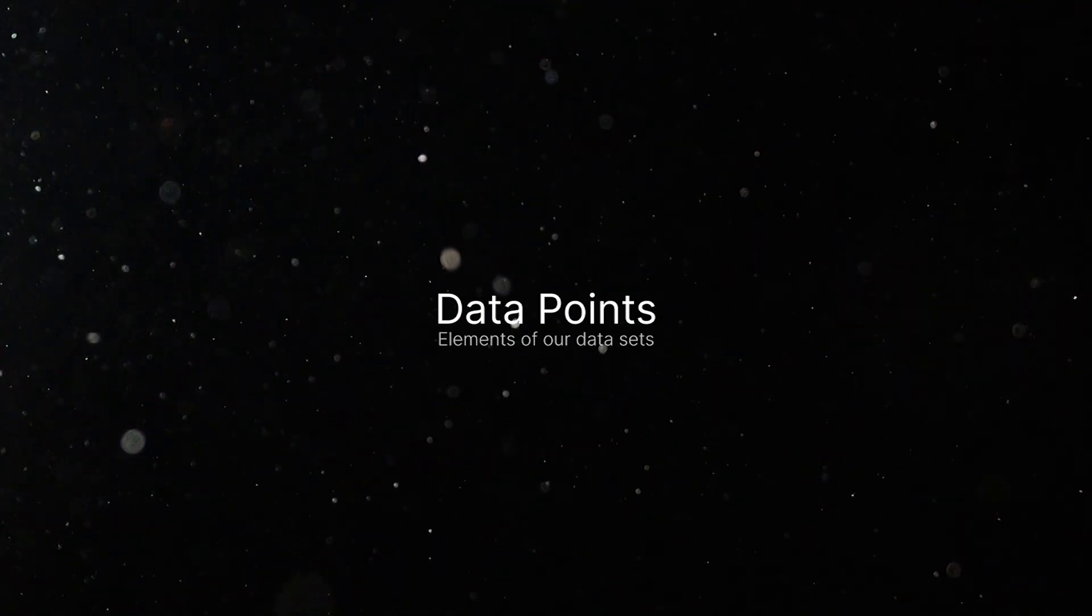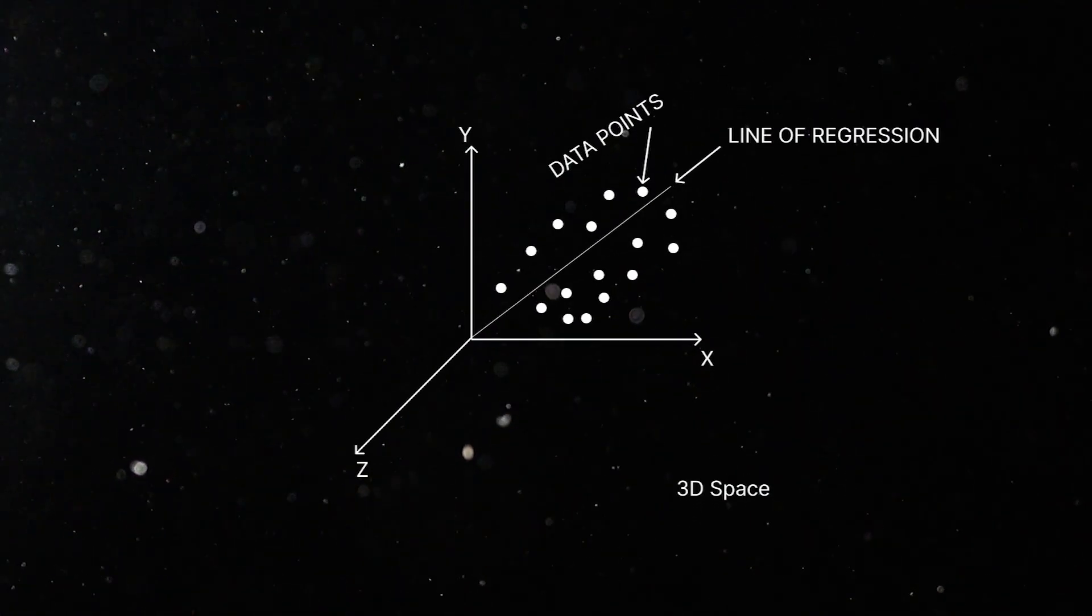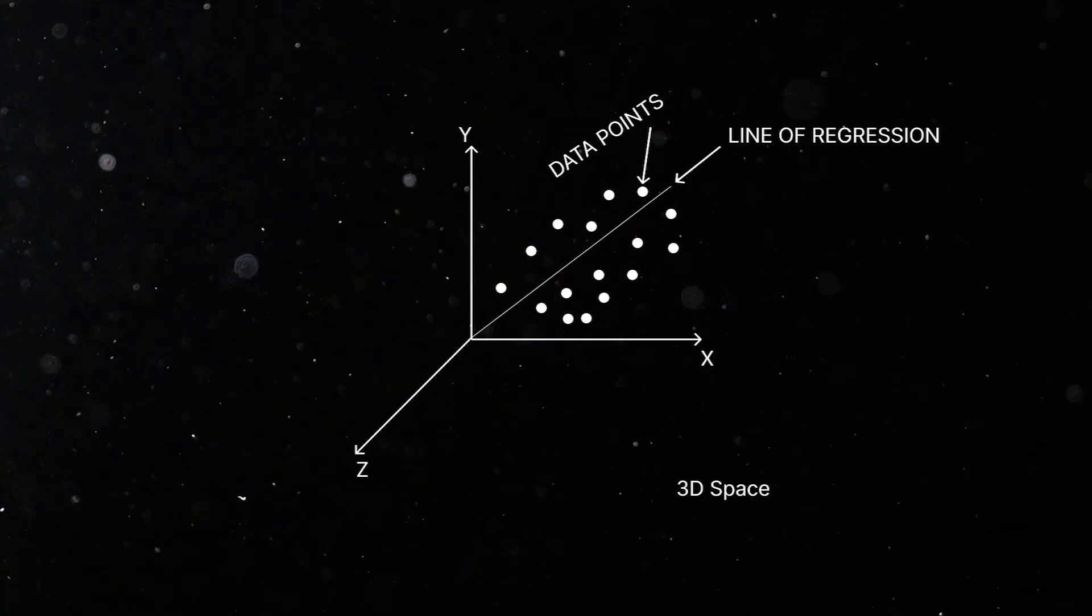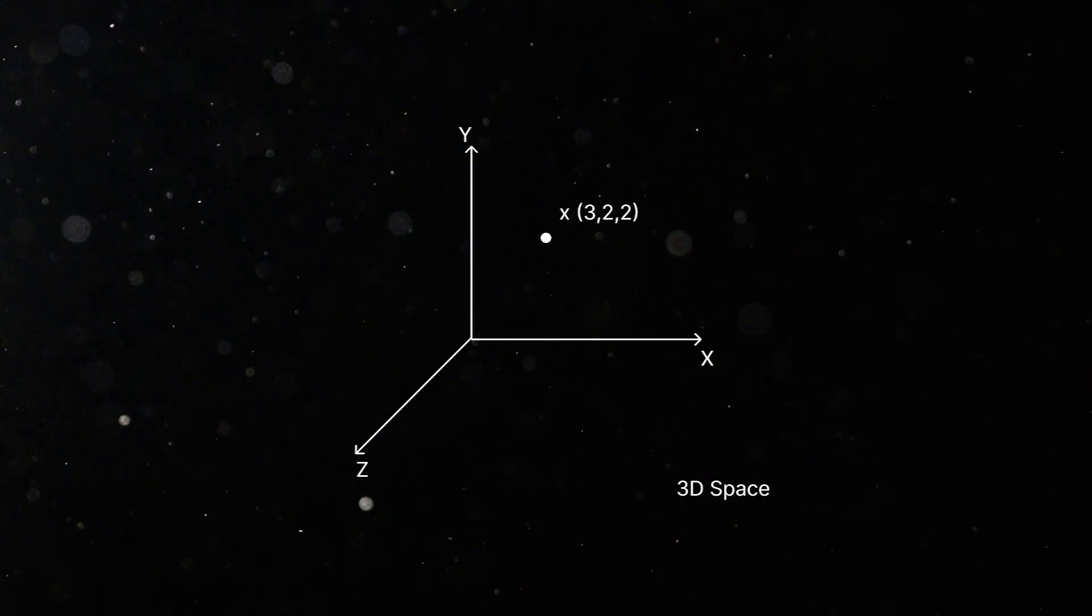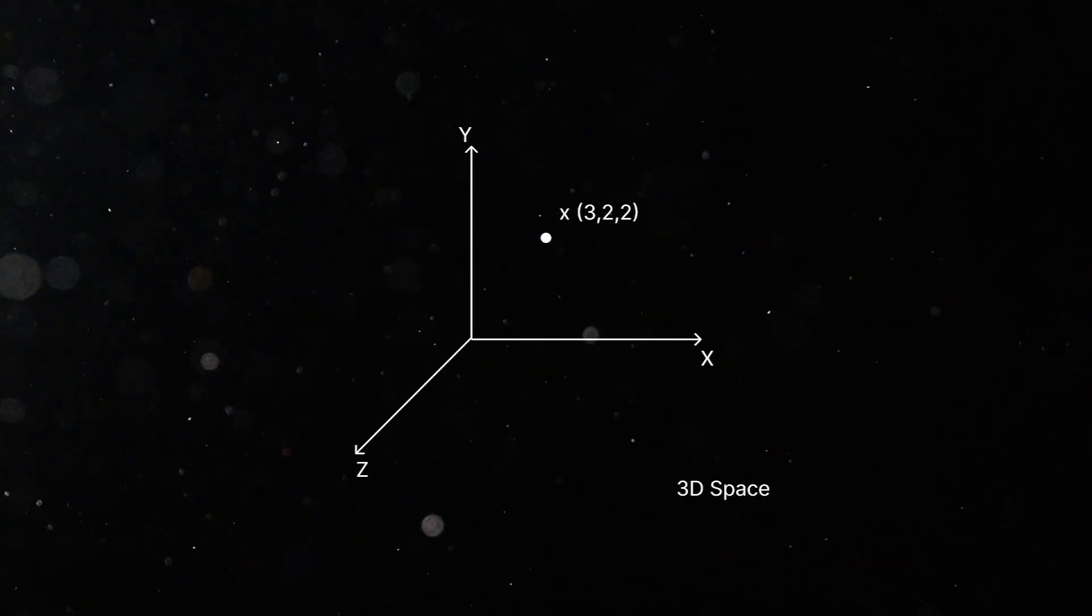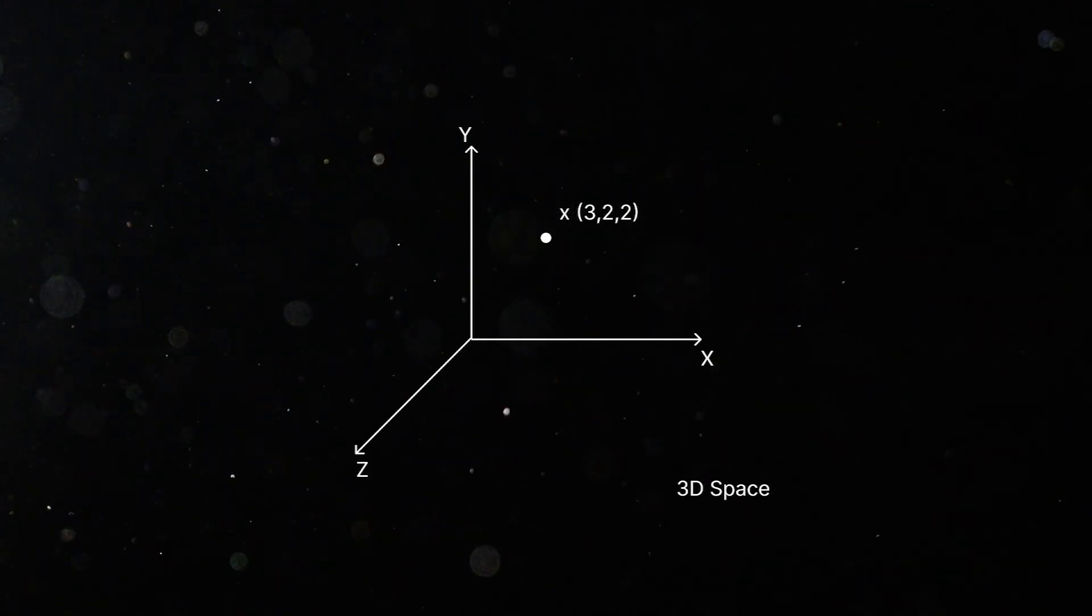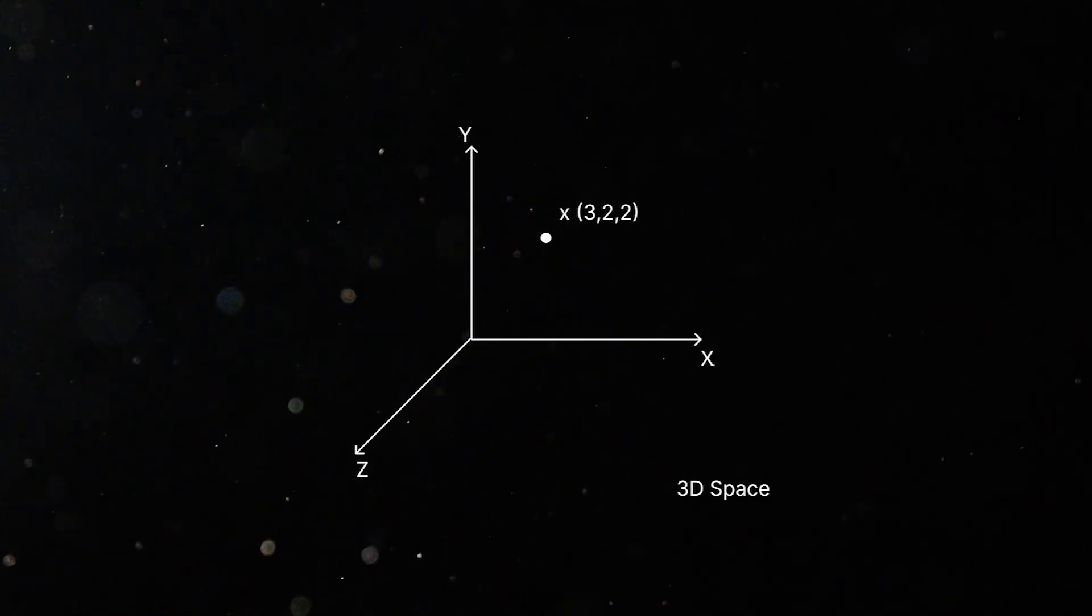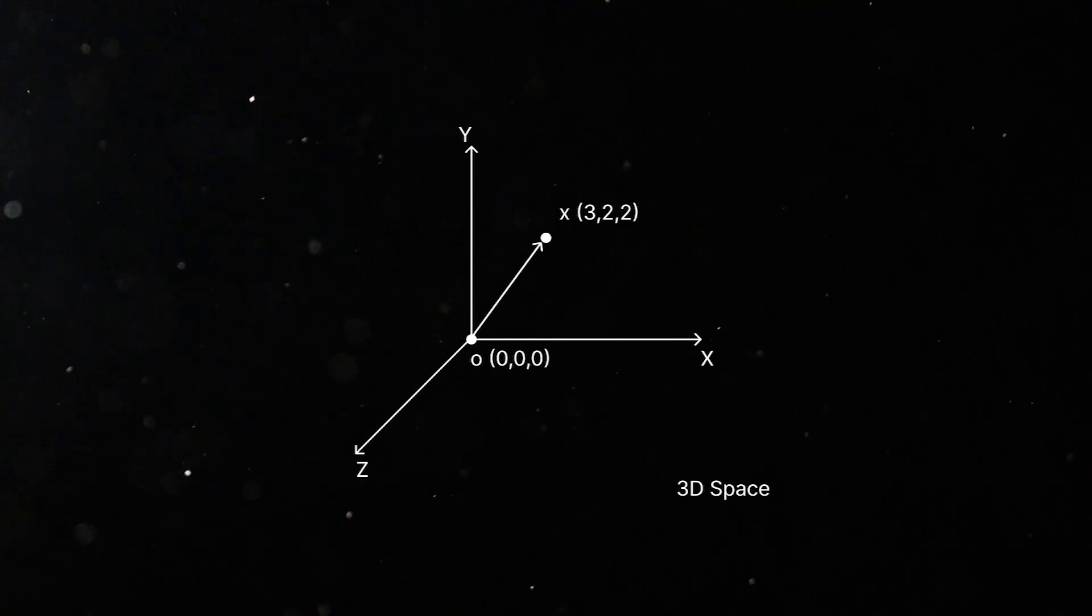In machine learning, we work with data points which are the elements of our data sets and also we want to describe them in terms of their position in n-dimensional space. So, let's first distinguish between two concepts. We can represent a point in three-dimensional coordinate system such as x which could be something like (3,2,2). This point is located in a three-dimensional space which we can also represent as a vector starting from the origin and ending at the point x.